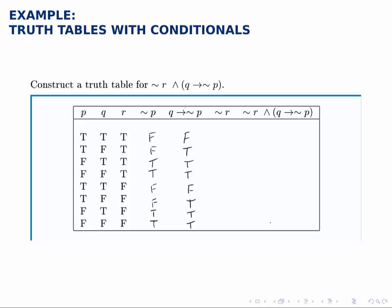Then for the not r column, we look at r and replace each true with false and each false with true. So we'll have four falses and then four trues.